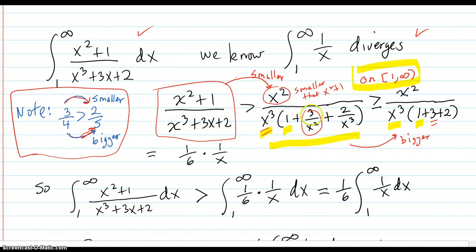But if we're at x equals 1, 3 is equal to 3. And then also 2 is bigger than 2/x³ on this interval. So I've made the denominator of the second fraction bigger.